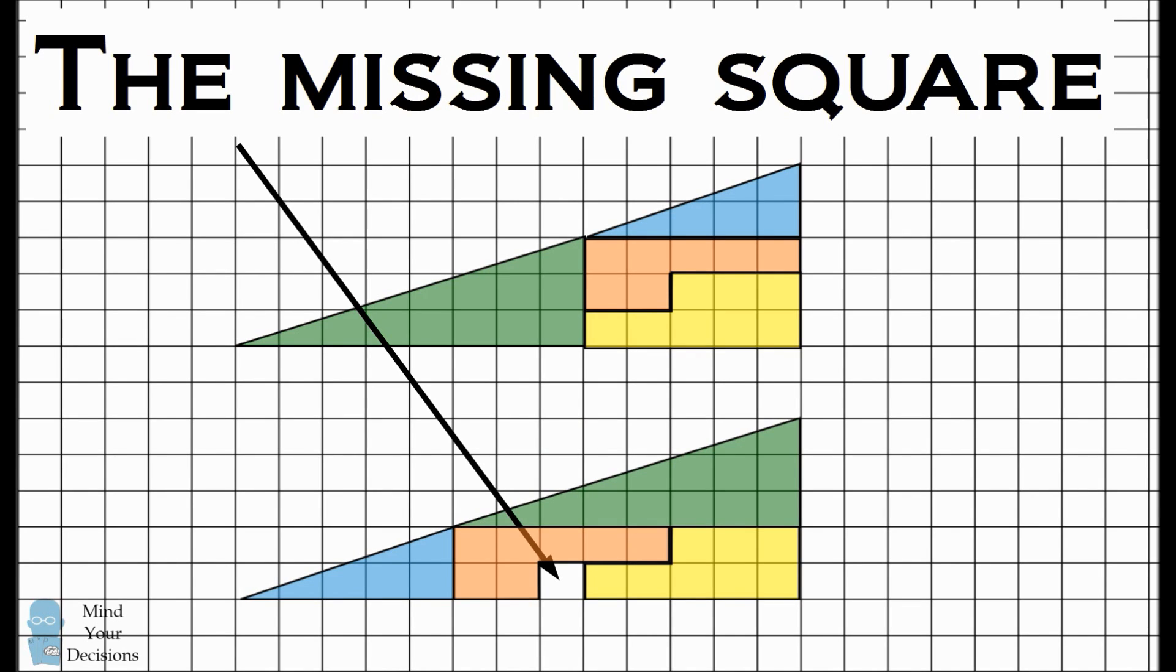Since both triangles are constructed of the four same shapes, the question is, where did this missing square come from? How is this possible?